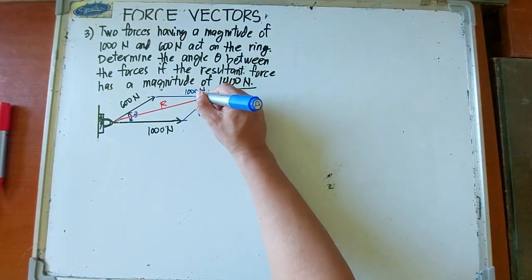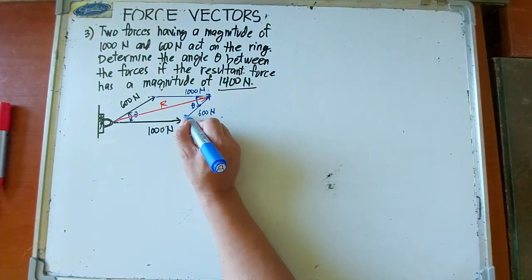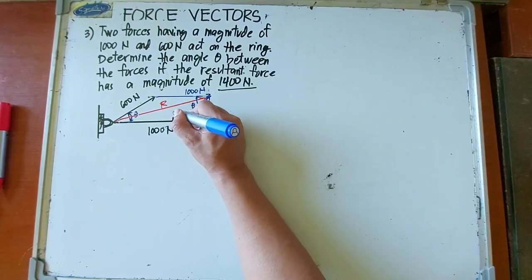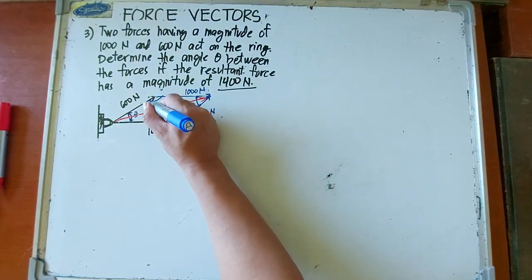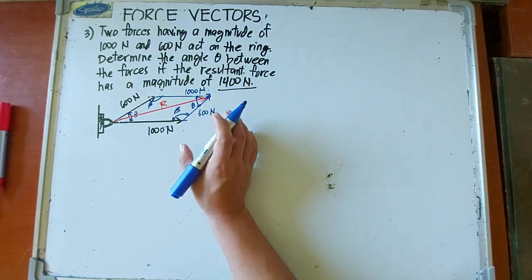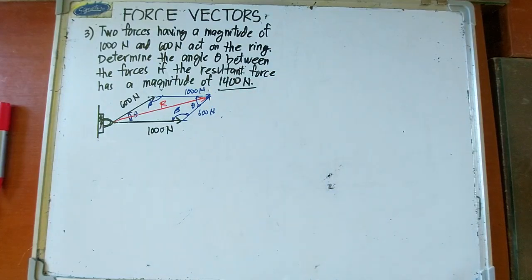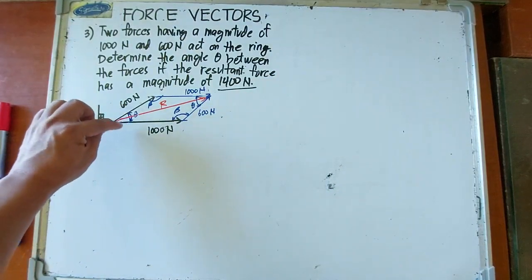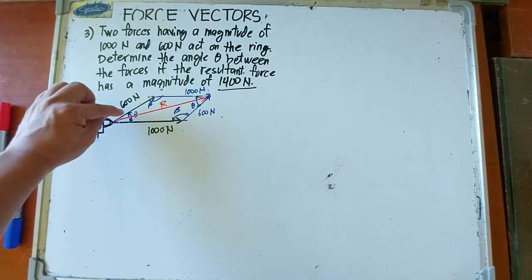This is the angle theta, the unknown we need to solve. If there is angle theta, then this is also angle theta. And let's designate this angle to be angle beta. If this angle is beta, then this is also angle beta. Given are three sides of our triangle, and we are solving for the angle along this part of the parallelogram.